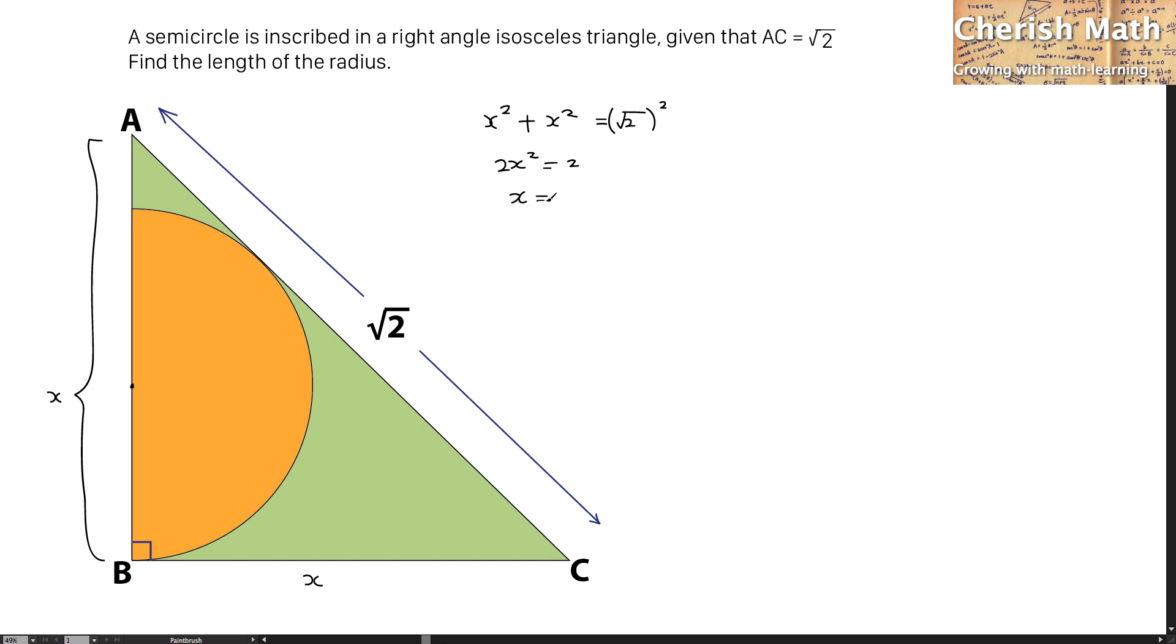And the value of X is 1. Let me draw the radius of the semicircle connecting to the point of tangent over here. I'm going to label it as M here.